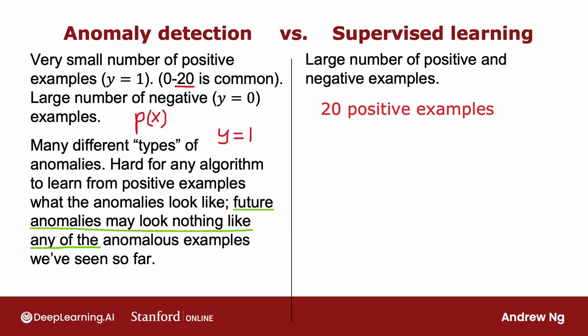Future anomalies may look nothing like any of the anomalous examples we've seen so far. If you believe this to be true for your problem, then I would gravitate toward using an anomaly detection algorithm. What anomaly detection does is it looks at the normal examples — the y equals zero negative examples — and just tries to model what they look like. Anything that deviates a lot from normal it flags as an anomaly, including a brand new way for an aircraft engine to fail that had never been seen before in your data set.